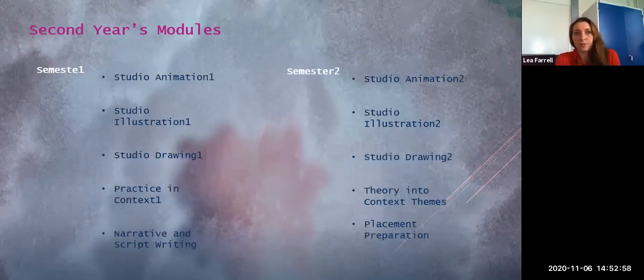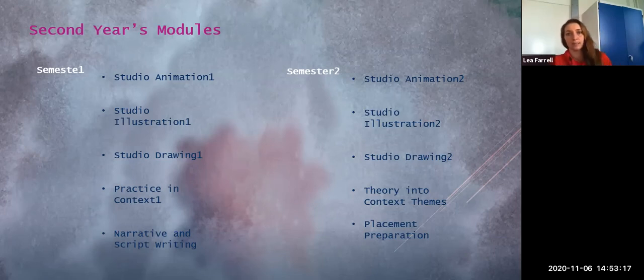Second year follows the first year's modules by building on the existing foundation. Second year's modules are Studio Illustration One and Two, Studio Animation One and Two, Studio Drawing One and Two. Again, one first semester, two second semester. These mainly practical modules are taught with the mixture of traditional and up-to-date techniques. In addition to these, the students are introduced to Narrative and Script Writing, Practice in Context, Theory in Context, Teams and Placement Preparation to enrich and strengthen the student experience.